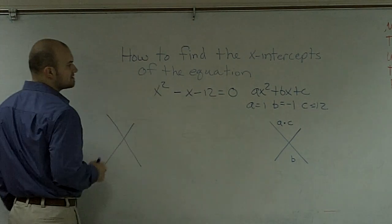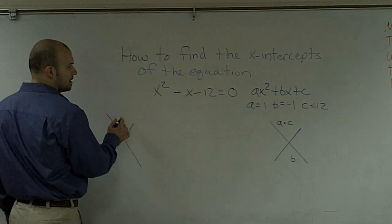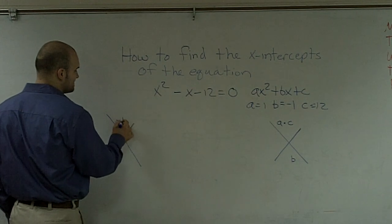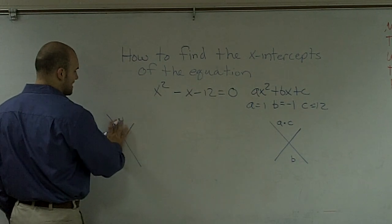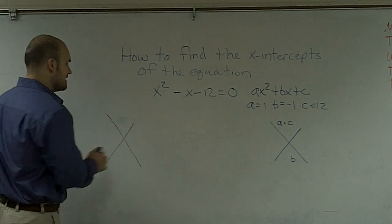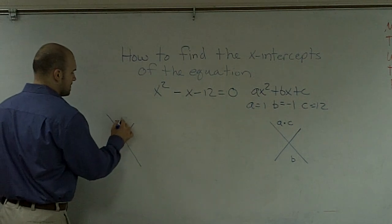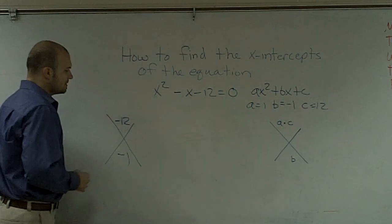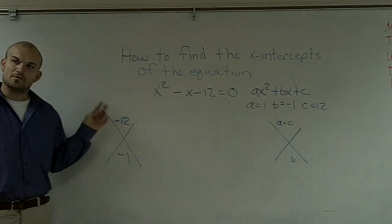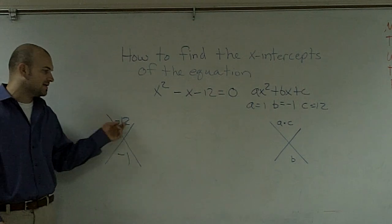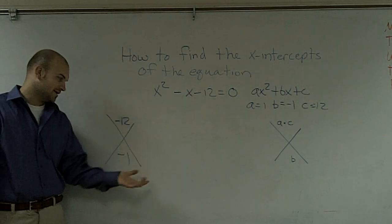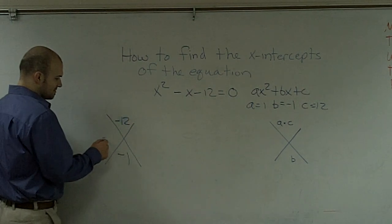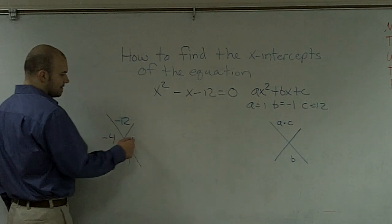So a times c in this problem is going to be negative 12. Then add to give you negative 1. So you need to look at the factors of negative 12 — what two factors of negative 12 multiply to give you negative 12 but add to give you negative 1. And what you'll notice is it will be negative 4 and 3.